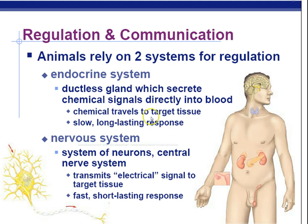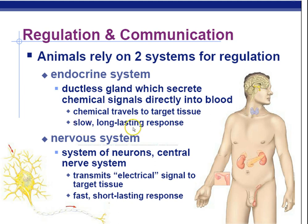These are chemical signals that travel to the target tissue via the blood, and they have a long-lasting response. But it takes longer because you have to deliver it via the blood. So, the endocrine system uses ductless glands that secrete directly into the blood — it takes a longer time for the response to take place, but it lasts longer.